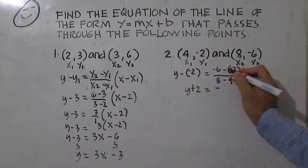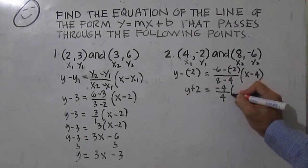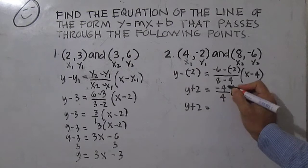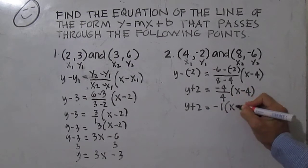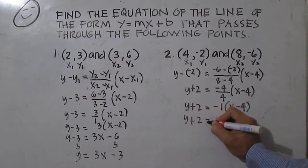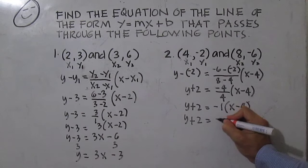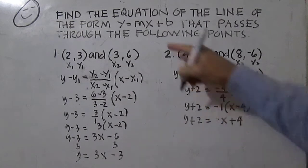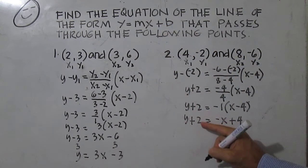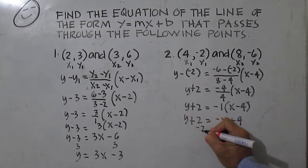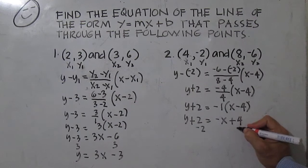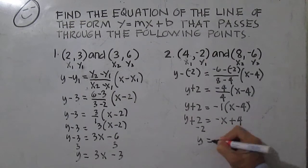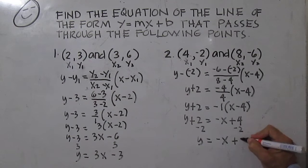The opposite of negative two is positive two, so y plus two equals negative four over four times x minus four. This simplifies to y plus two equals negative one times x minus four, so y plus two equals negative x plus four. To write in the form y equals mx plus b, add negative two to both sides: y equals negative x plus two.